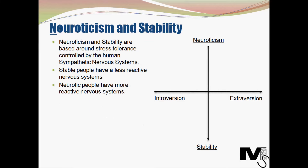Now let's look at the dimension of neuroticism and stability. This dimension is based around stress tolerance, which is controlled by the human sympathetic nervous system. Stable people have a less reactive nervous system and therefore remain calm, consistent, and level-headed. Neurotic people on the other hand have more reactive nervous systems and can therefore be prone to overreacting to stimuli. Neurotic people can worry more, get angry easily, or fear things more easily than stable people.